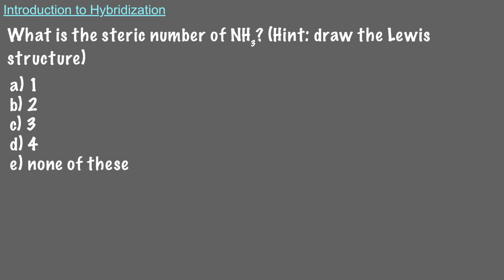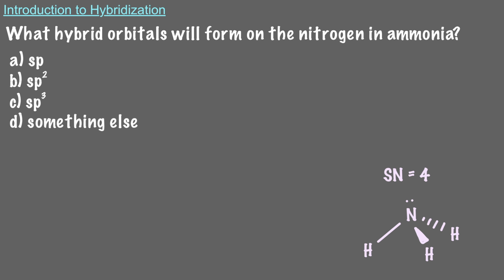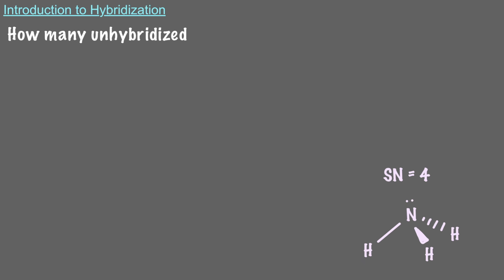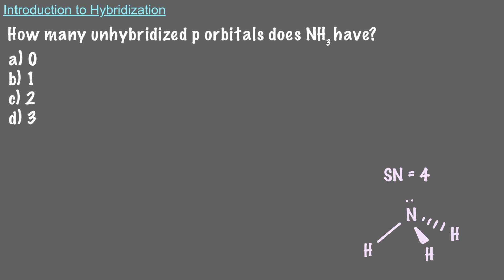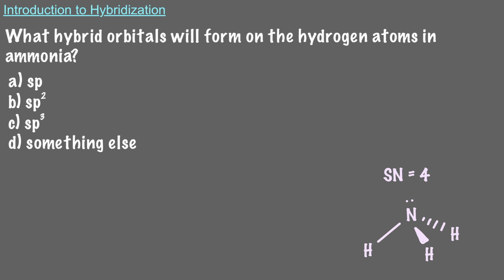What is the steric number of NH3? The Lewis structure for ammonia has three single bonds between the nitrogen and the three hydrogens, and it also has one lone pair. That makes the steric number of ammonia 4. Since the nitrogen atom's steric number is 4, nitrogen forms sp3 hybrid orbitals. There are no unhybridized p orbitals in NH3, since all three of the nitrogen's p orbitals were combined to form the four sp3 orbitals. Since hydrogen's valence shell is n=1, hydrogen can't hybridize and will remain 1s.